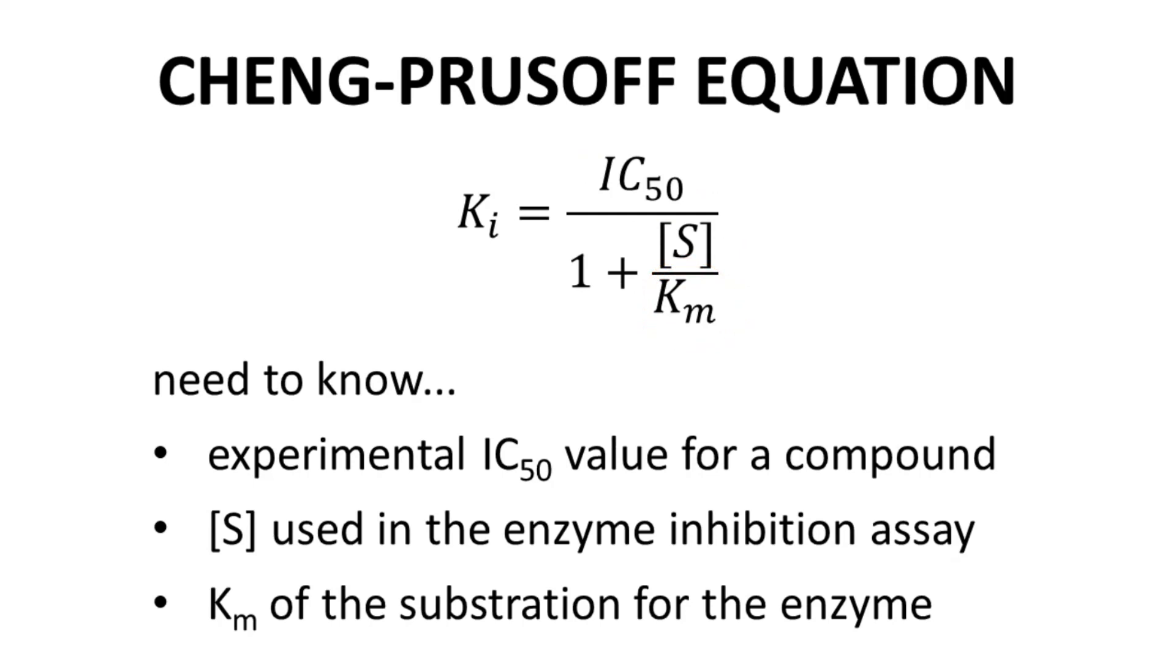The IC50 value, substrate concentration, and KM must all have the same units, whether molar, millimolar, micromolar, or nanomolar. In a literature report, the substrate concentration used in the assay should be included in the experimental section. The Michaelis constant should be available elsewhere in the literature.